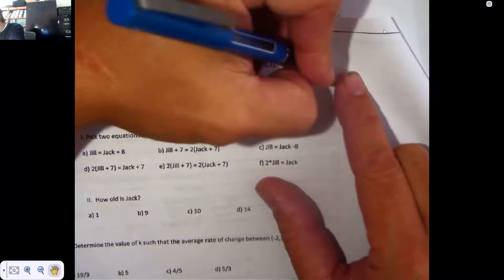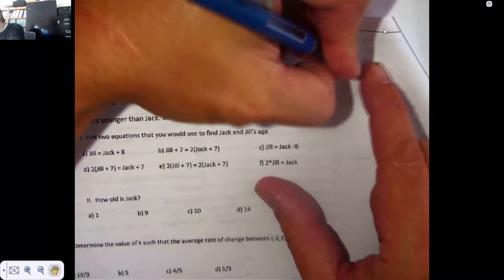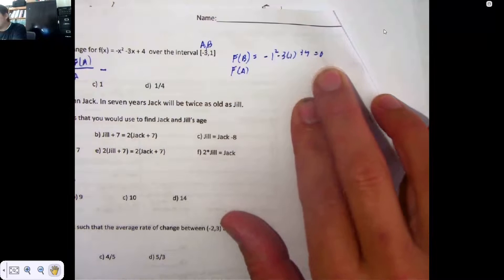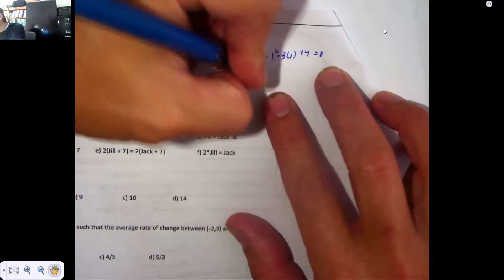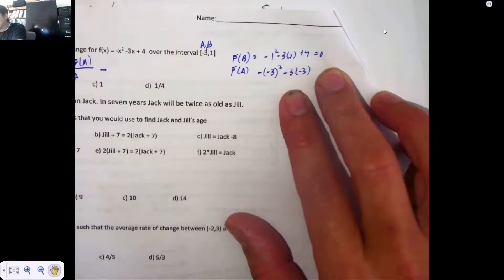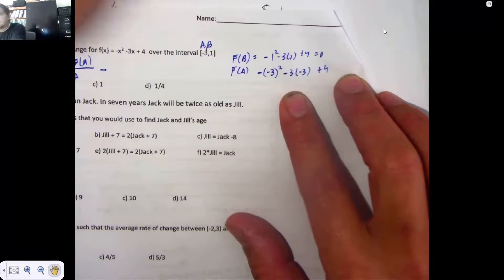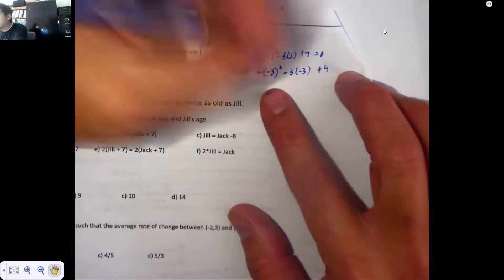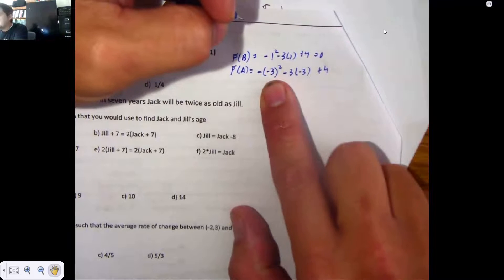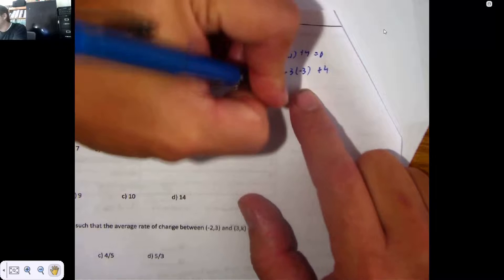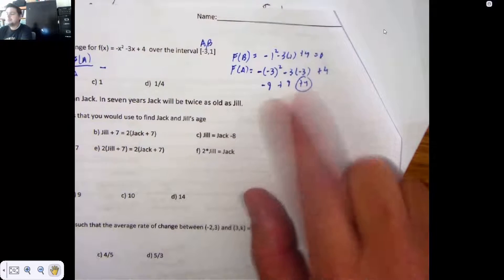You find f(B) by plugging in a 1. I can do that one in my head. That should be 0. You find f(A) by plugging in a -3. Notice how I'm writing it. That's kind of important. You're more than welcome to use a calculator. Type that in just as it's written. But anyways, that would become a -9. -3² is positive 9, but the negative symbol up front makes it negative. This becomes a positive 9, and then plus 4. So we're left with 4 because those two cancel out.